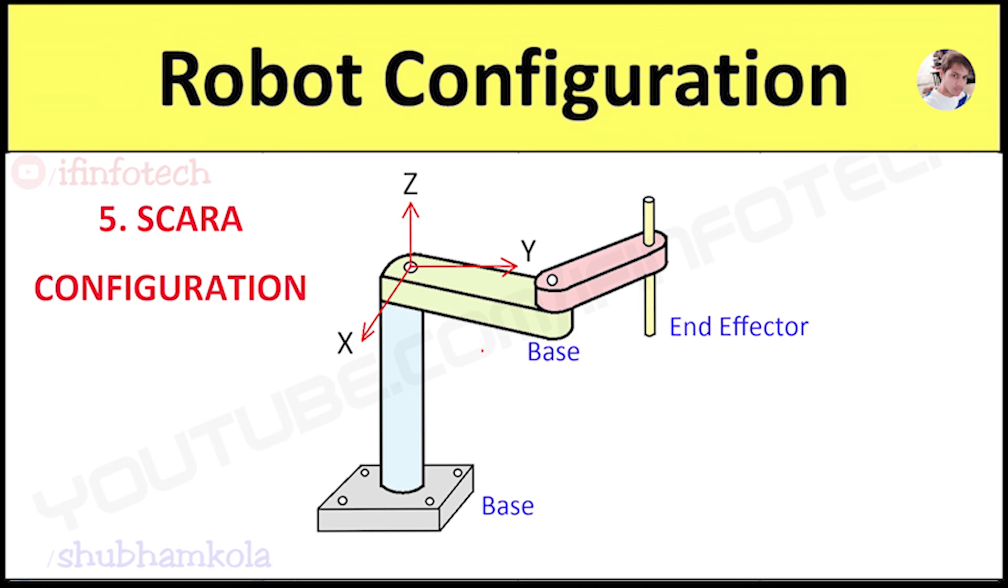The robot was developed under the guidance of Hiroshi Makino, a professor at University of Yamanashi. The arms of SCARA are flexible in XY axis and rigid in Z axis. As you can see in the figure, this is a representation of XYZ axes of SCARA robot. In the XY direction, the arm will be compliant and strong in Z direction.